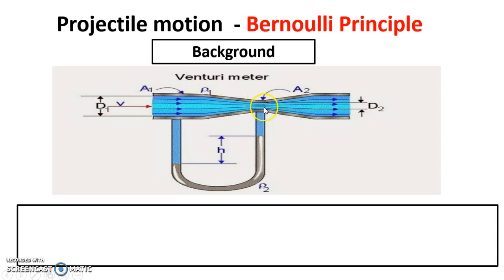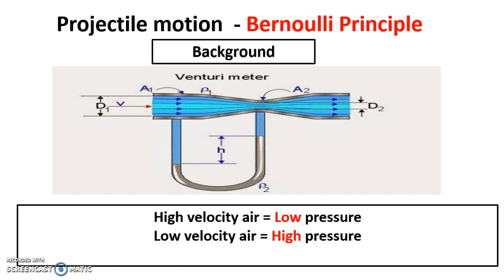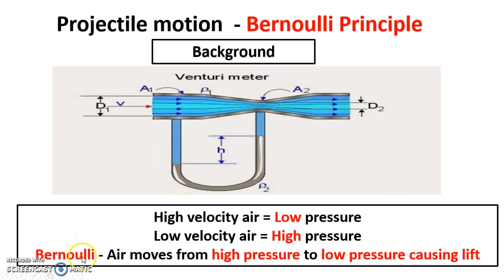The airflow was faster through the narrow section, then got slower again when there was more space. The big finding at the time was that when the airflow velocity was high — i.e. fast — there was actually a low pressure. And in opposition to that, when there was a low velocity, there was a high pressure. Bernoulli's principle basically stated that air moves from an area of high pressure to low pressure, causing lift.